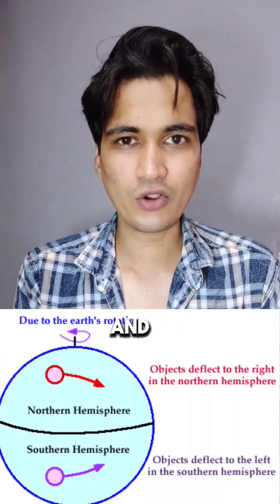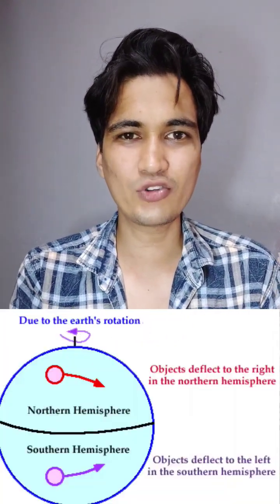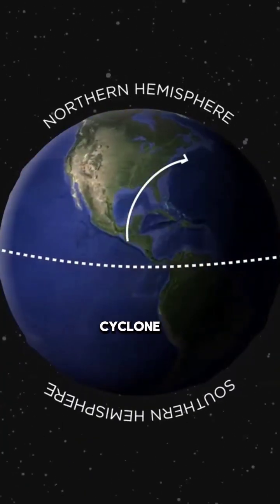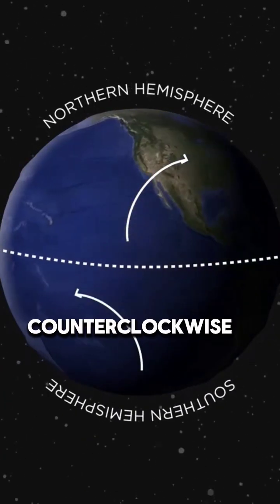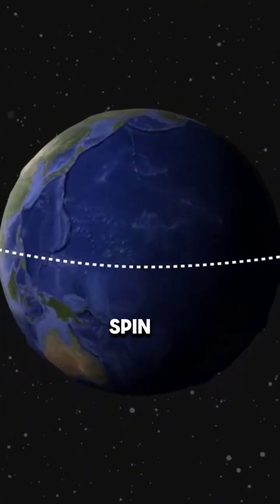The earth's rotation, the Coriolis effect, causes the rising air to spin. In the northern hemisphere cyclones spin counterclockwise and in the southern hemisphere they spin clockwise.